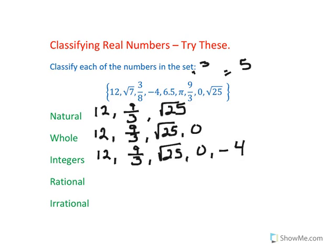Skip down to the irrational, which are really easy to recognize. All radicals for the most part, unless it's a perfect square, like 4 and 9 and 16 and 25, in this case 25, 36, 49, 81, 100, 121, 144. And pi. Pi is always irrational.